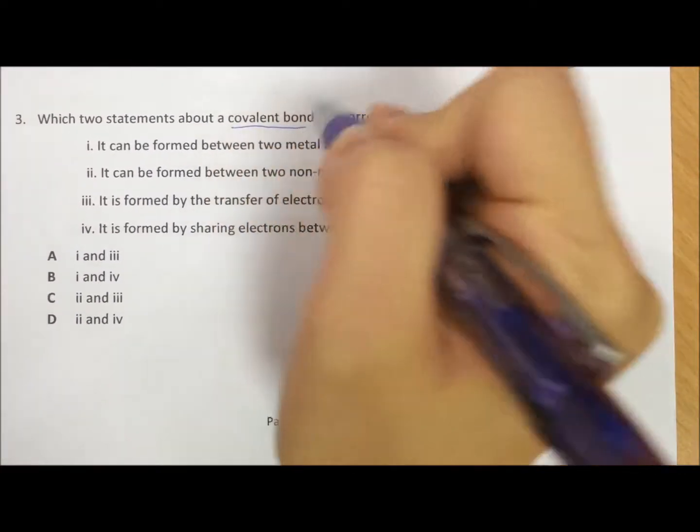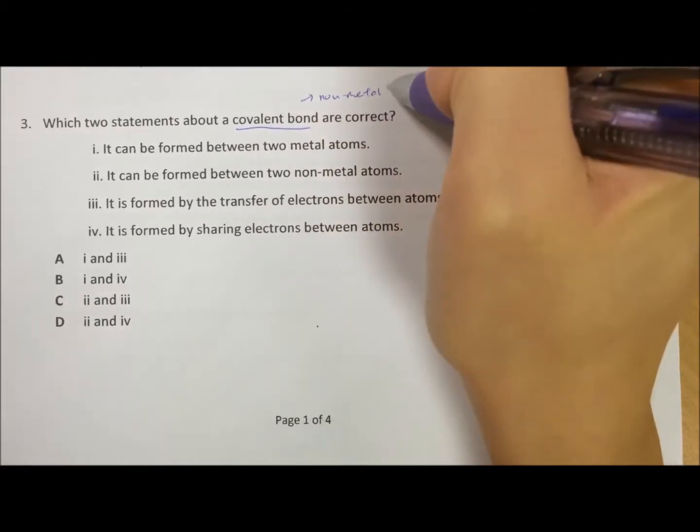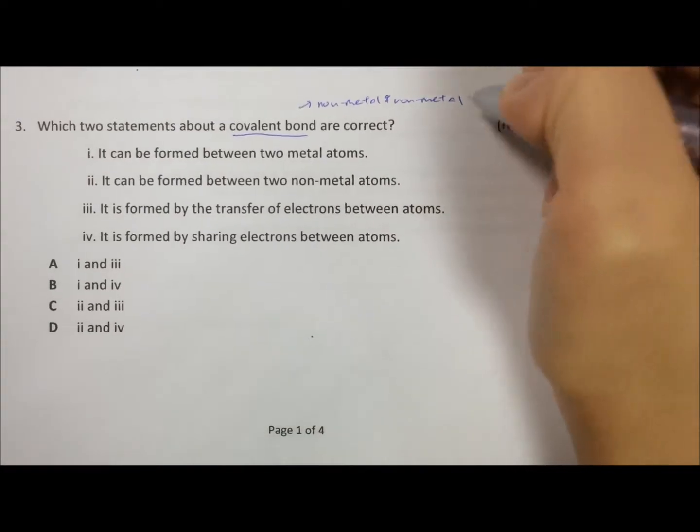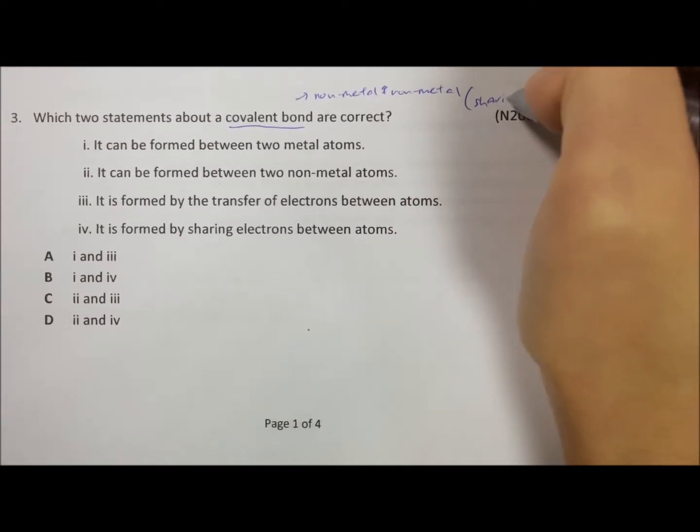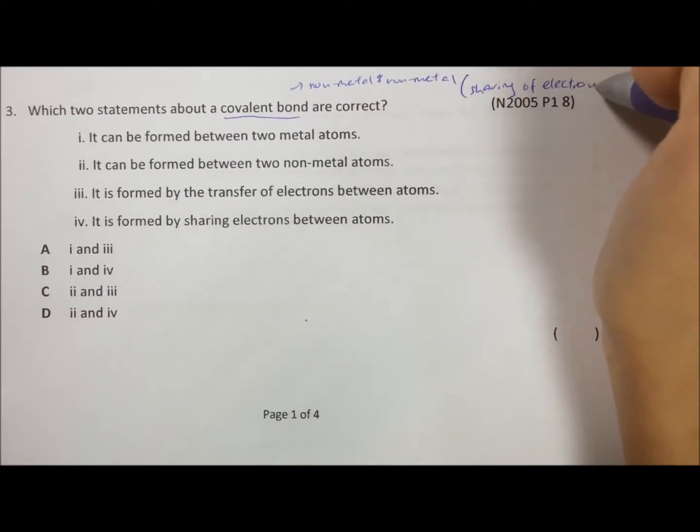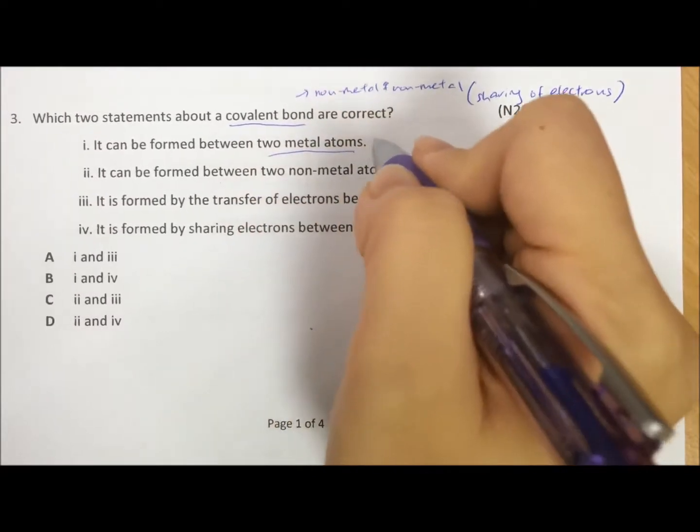Worksheet 4, question 3. They say covalent bond. So covalent bond is between non-metal and non-metal. Then is it transfer or sharing? It is sharing. You must remember, covalent bond is non-metal sharing of electrons.